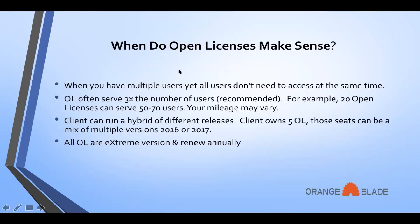Talking about open licenses: open licenses make sense when you have multiple users but all users don't need to access the licenses at the same time. An open license often serves three times the number of users — that's what we recommend. For example, 20 open licenses can serve 50 to 70 users. The client can run a hybrid of different releases; if a client owns five open licenses, those seats can be a mix of 2016 or 2017 versions. All open licenses are Extreme versions, giving you the full power of Review, and they renew annually — it's an annual subscription.